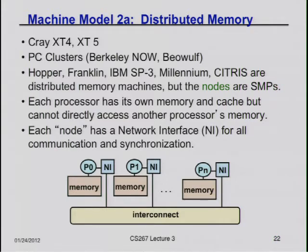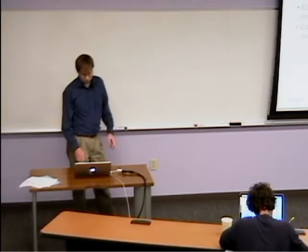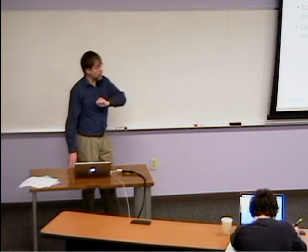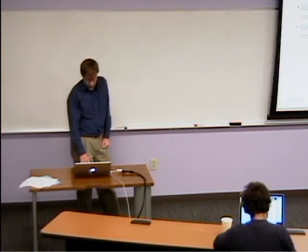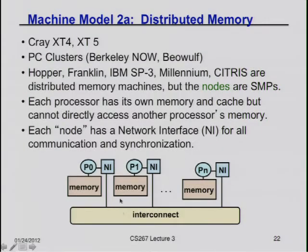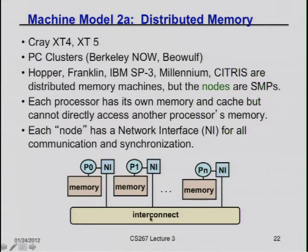These distributed memory machines are historically the dominant ones on the large side, because they're the easiest to build. You're going to be doing your homework on Franklin and Hopper at LBL. They're all distributed memory machines, even if the individual node is a shared memory four-core or eight-core chip. From the hardware point of view, there's a processor, a memory, an interconnect, and every processor is connected to a network interface card. This processor handles all the message passing so the main processor can keep computing while messages are sent around the network.